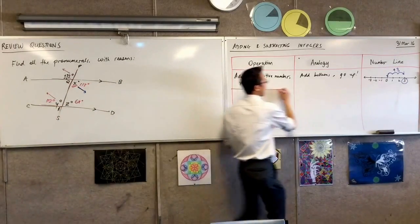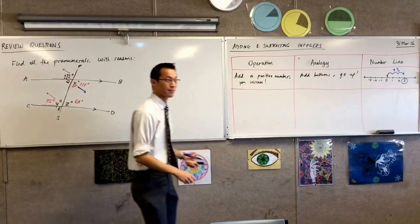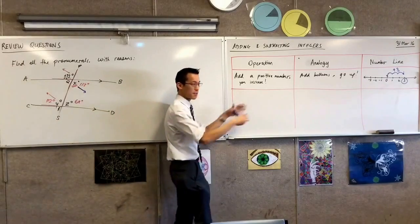Now, if you can add positive numbers, you can do other things to positive numbers. What's the opposite operation of adding? Yes, Kim? Subtracting. Subtracting. Very good. So if I now think about subtracting.